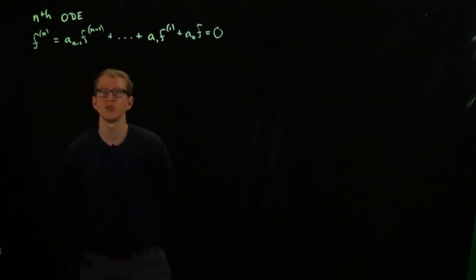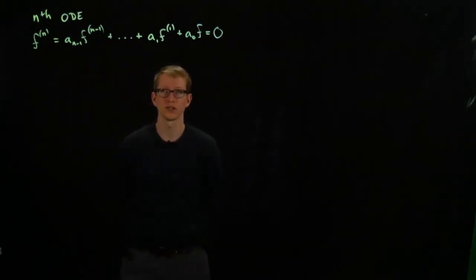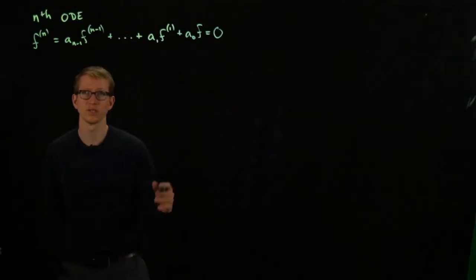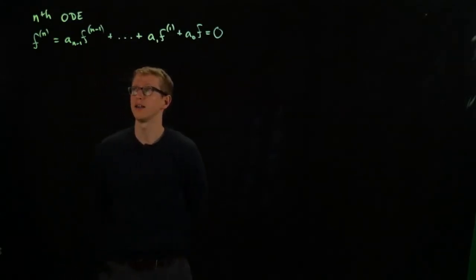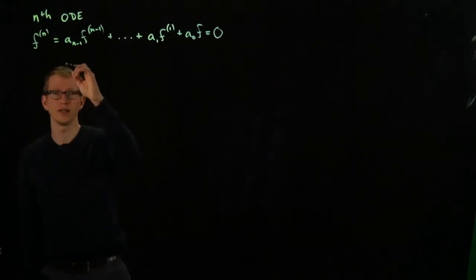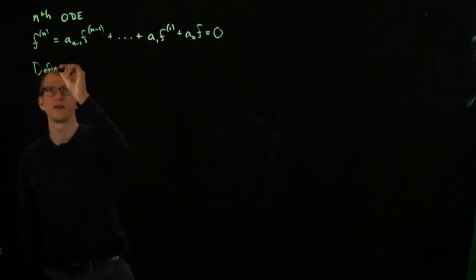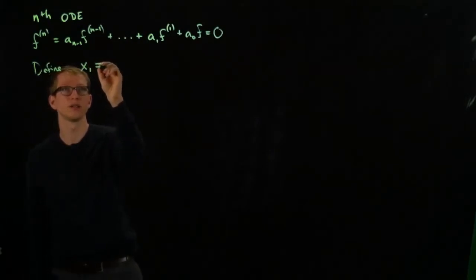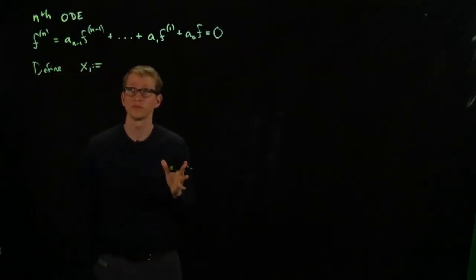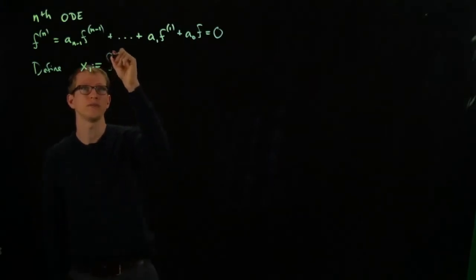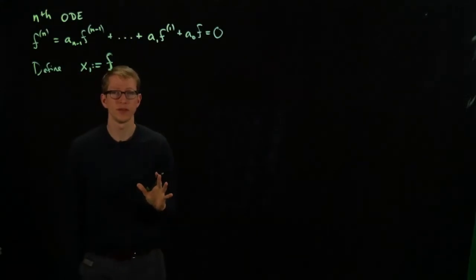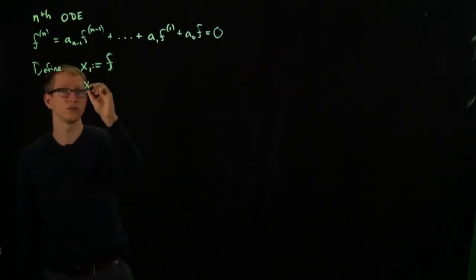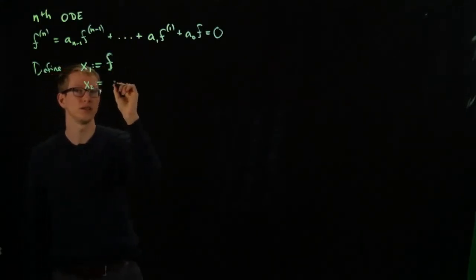You might even allow the coefficients to be functions themselves of the variable input. The relationship between such an ordinary differential equation with some initial conditions and vector fields is the following. We define new coordinates: we can define x_1 to be the actual function f itself.